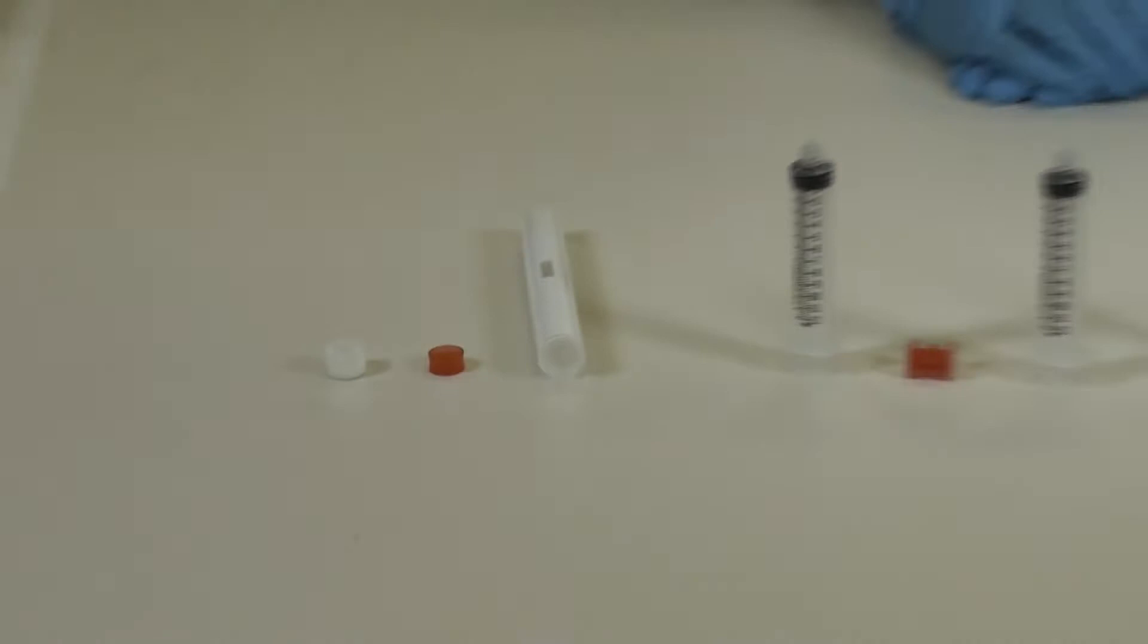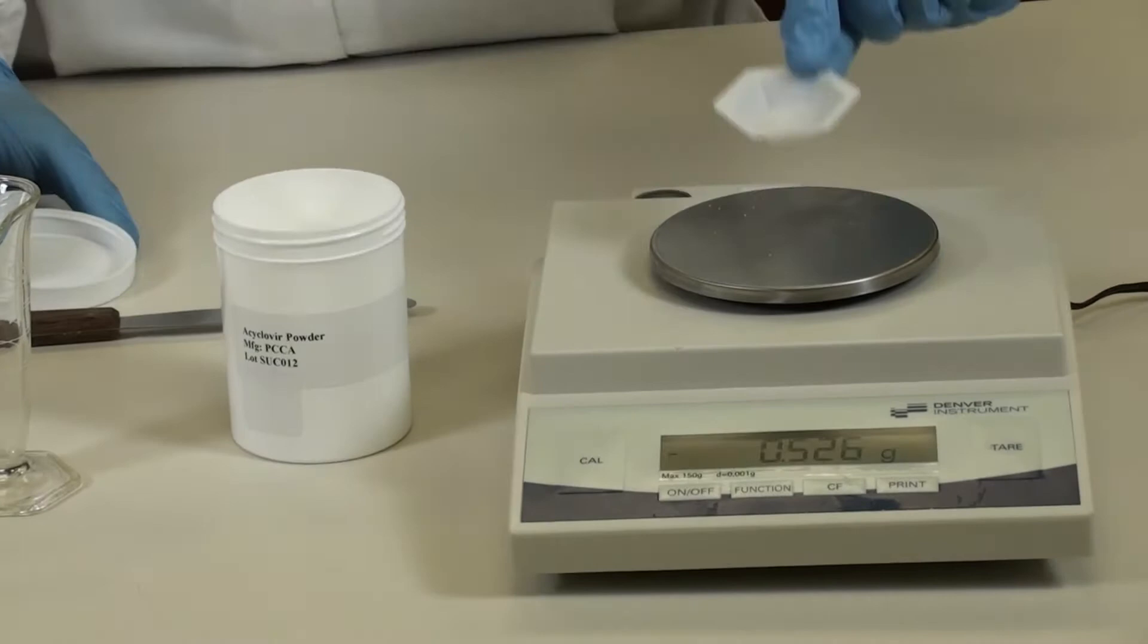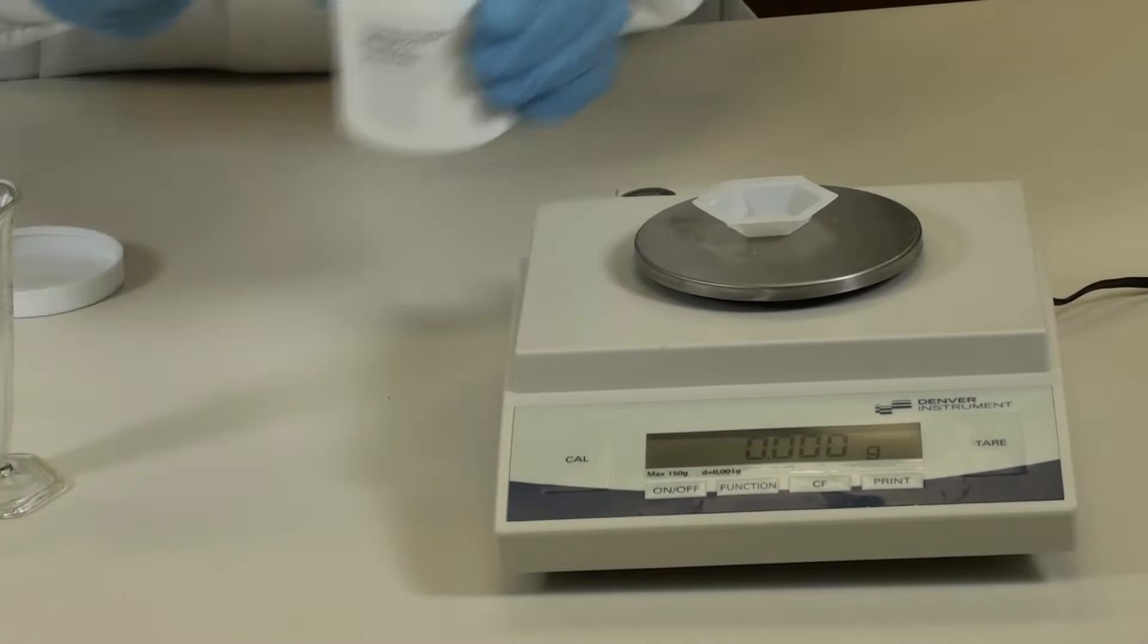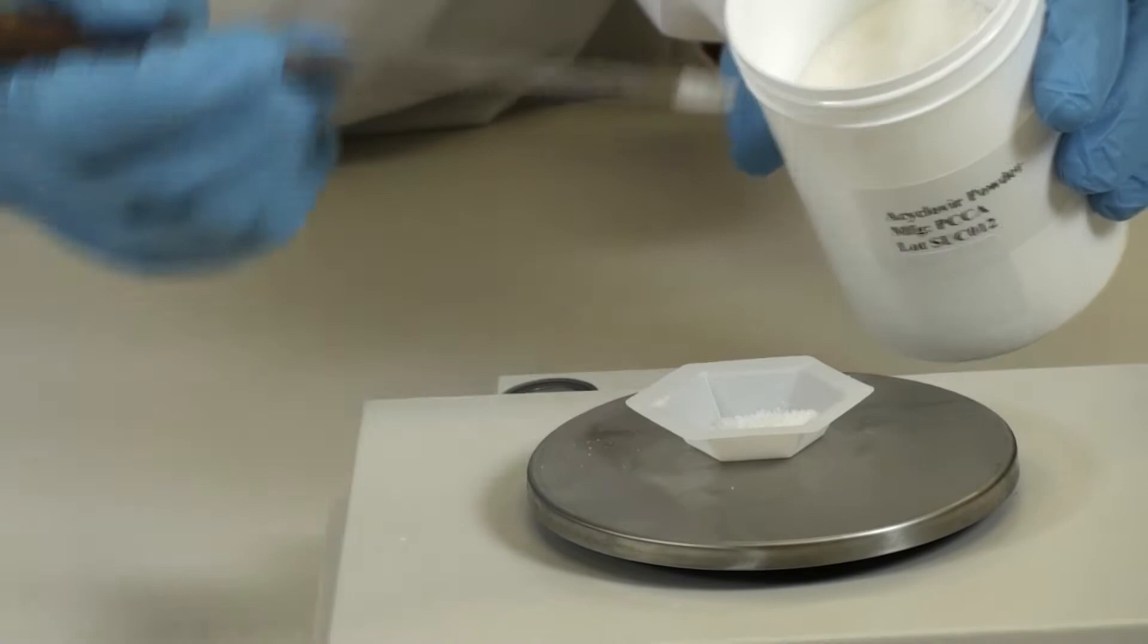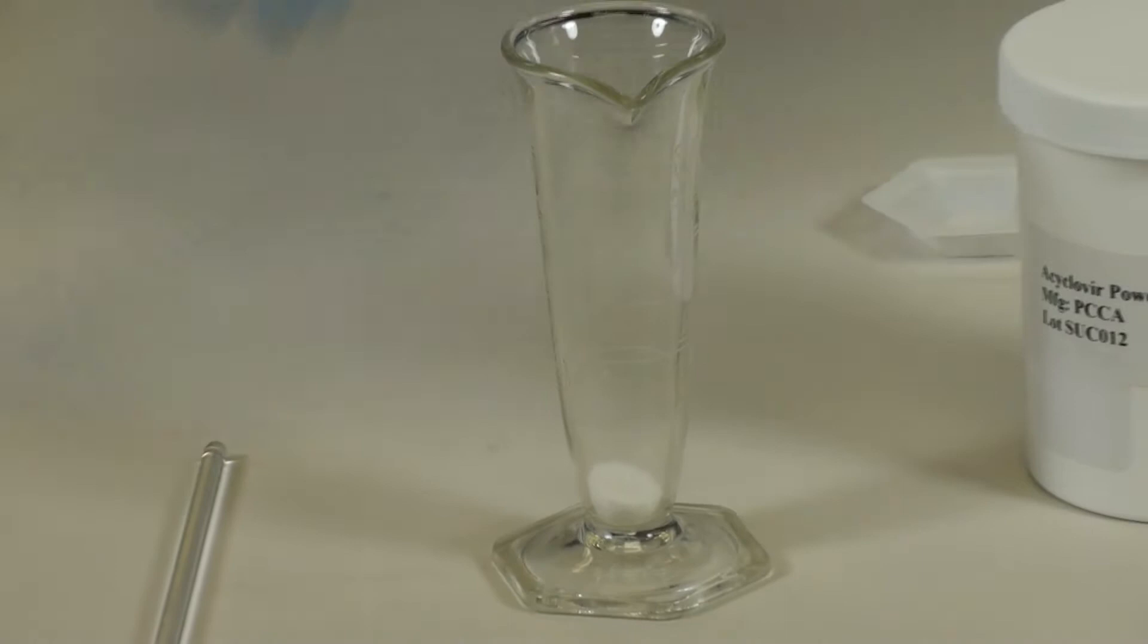Weigh the required amount of acyclovir powder. Place the small weigh boat on your scale and tare your scale. Place the acyclovir powder into your 1 ounce graduated conical and place the glass stirring rod into the conical.